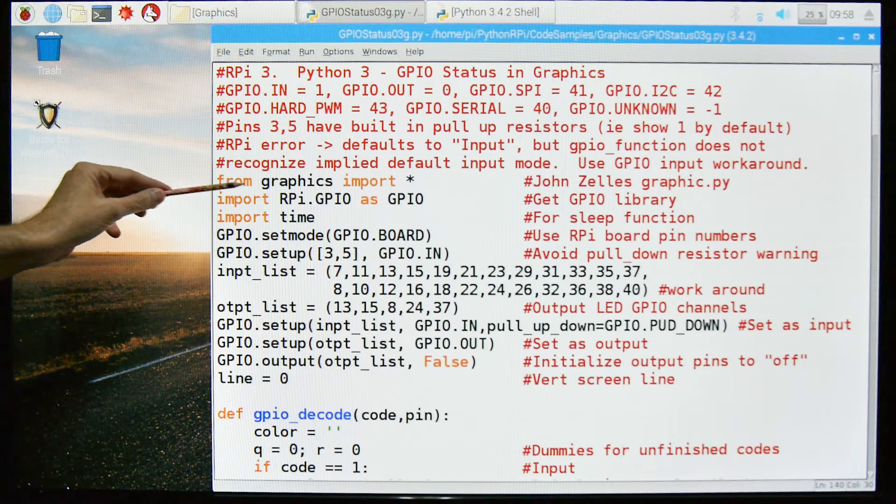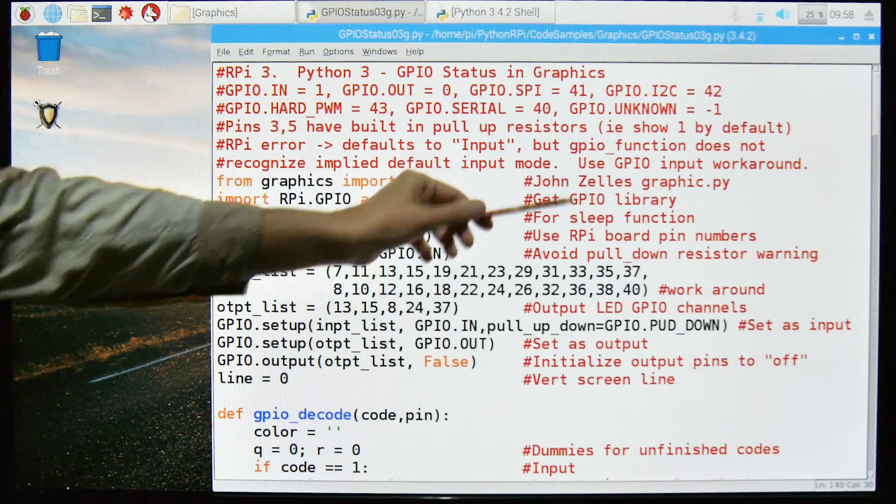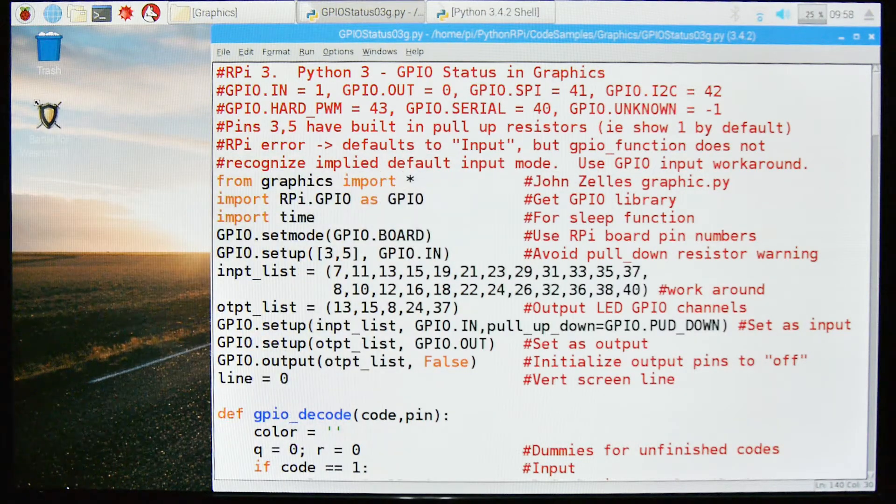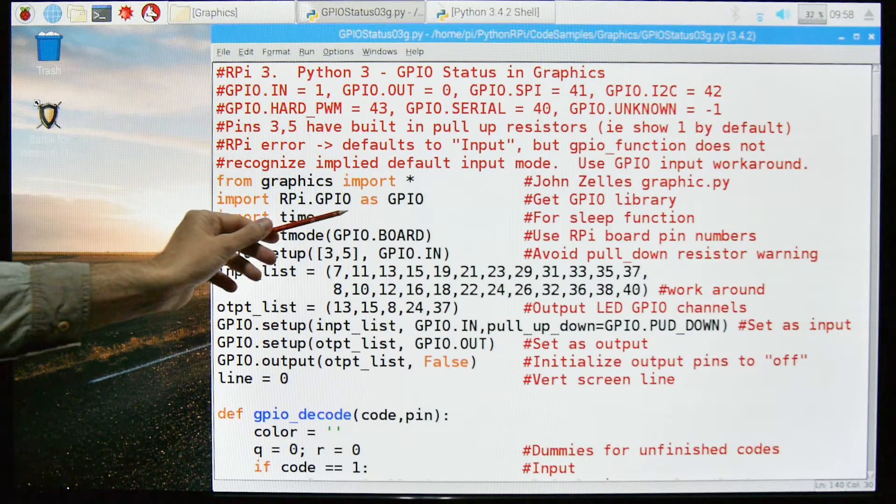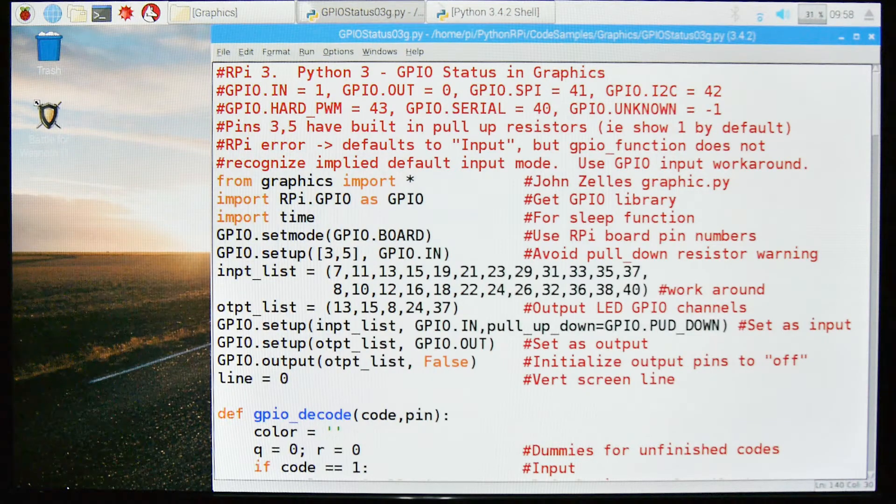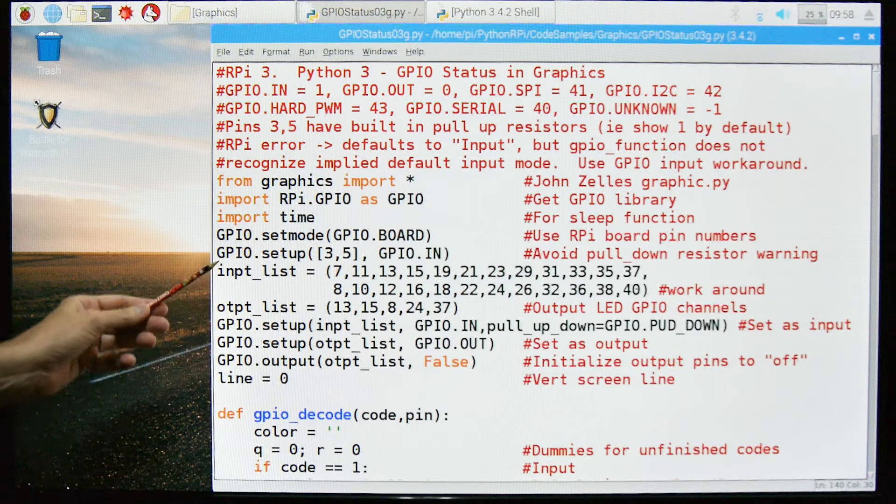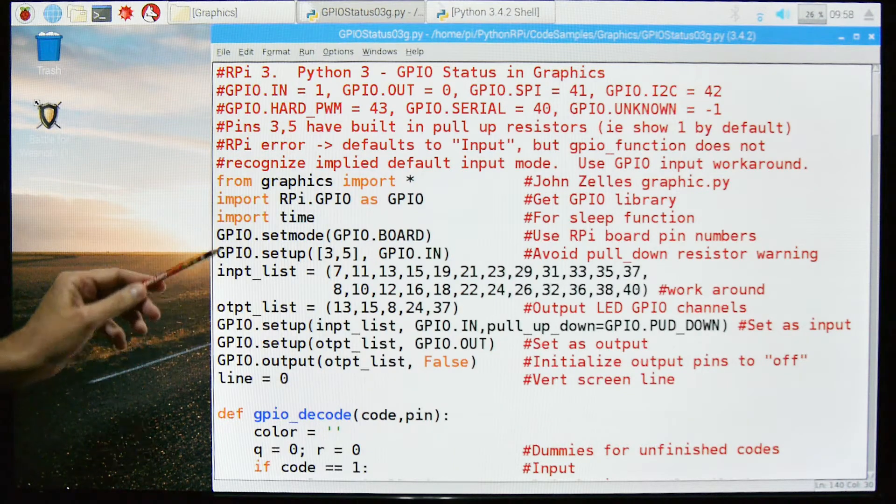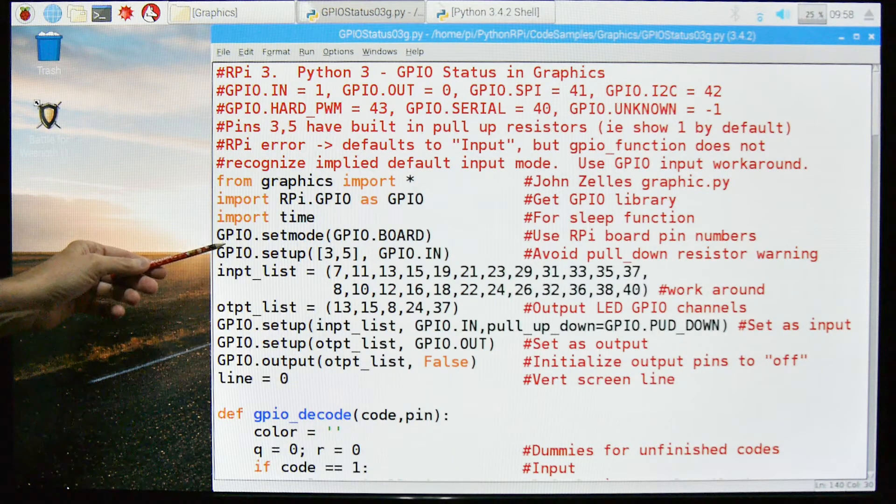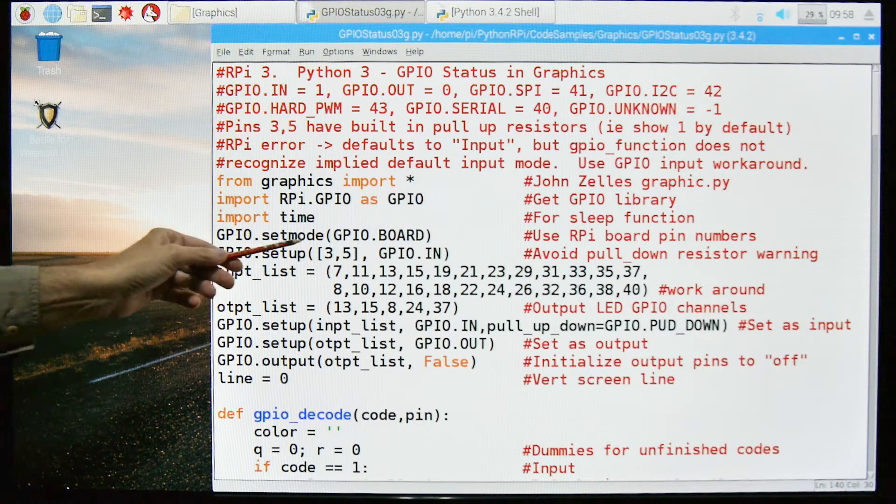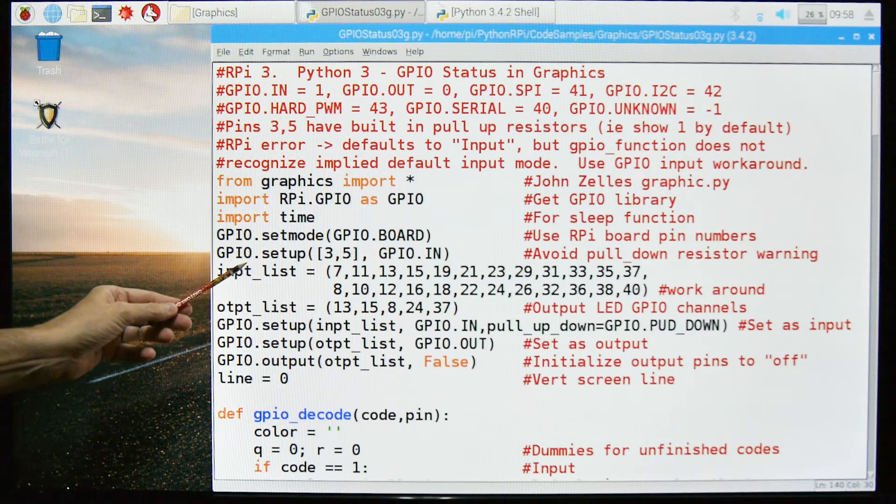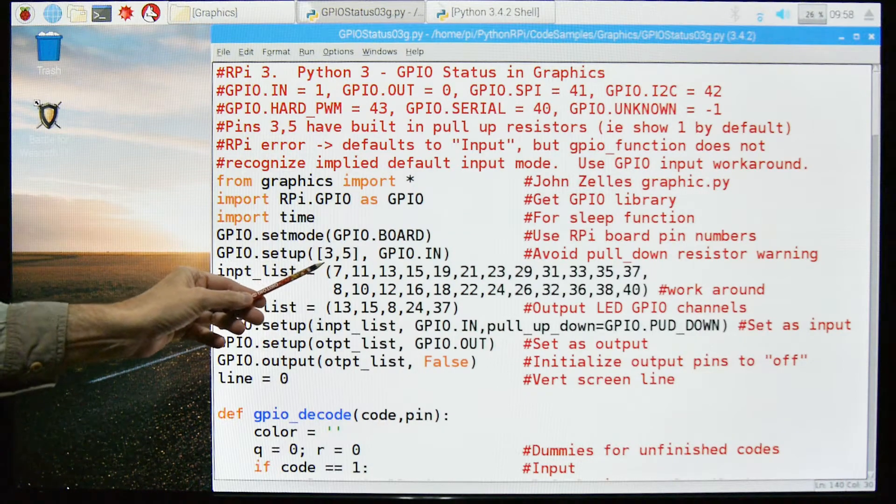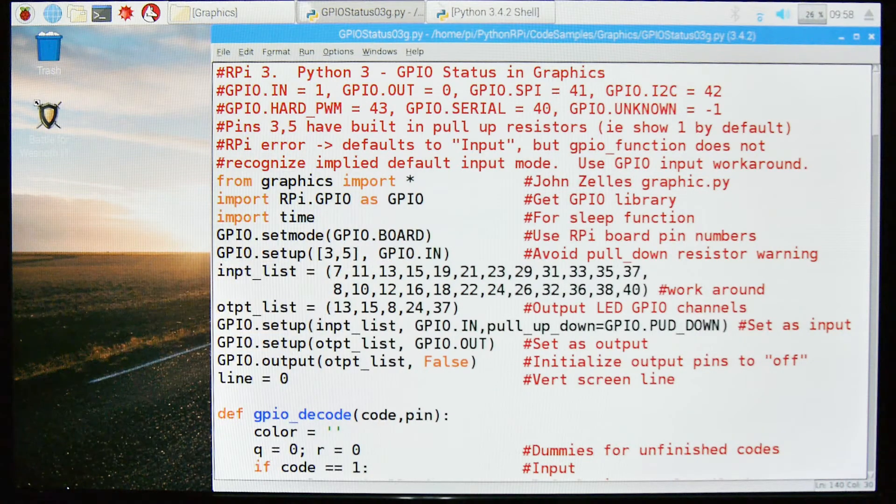From graphics we're going to import everything. This is John Zella's graphic.py, a very good but simple graphic library. We're going to import all of the GPIO stuff from the GPIO library. We're going to import the time function because we need the sleep mode, mostly for the demonstration. It's not really essential for the actual operation. We're going to set the GPIO to board mode.